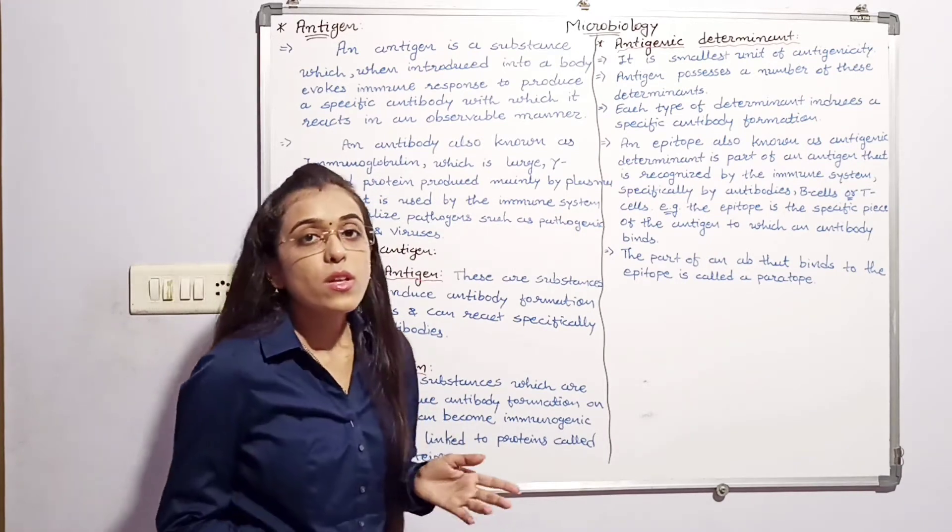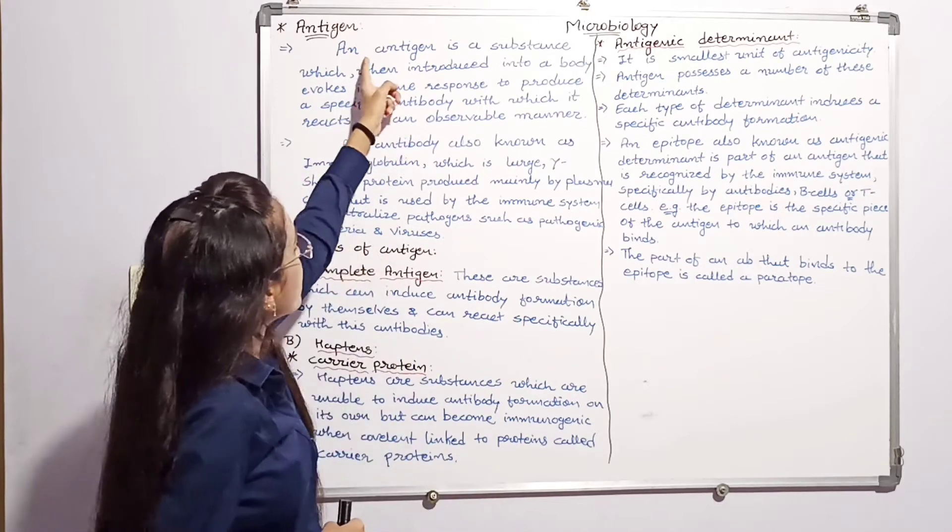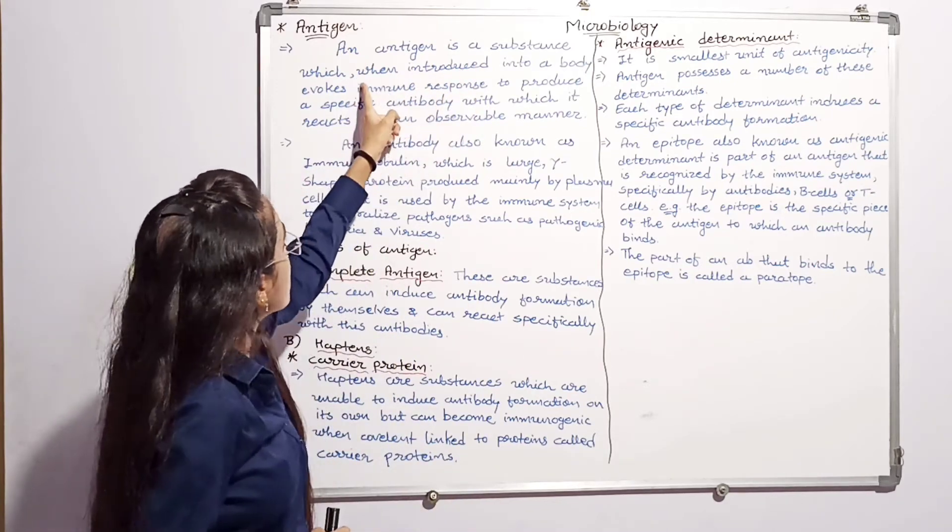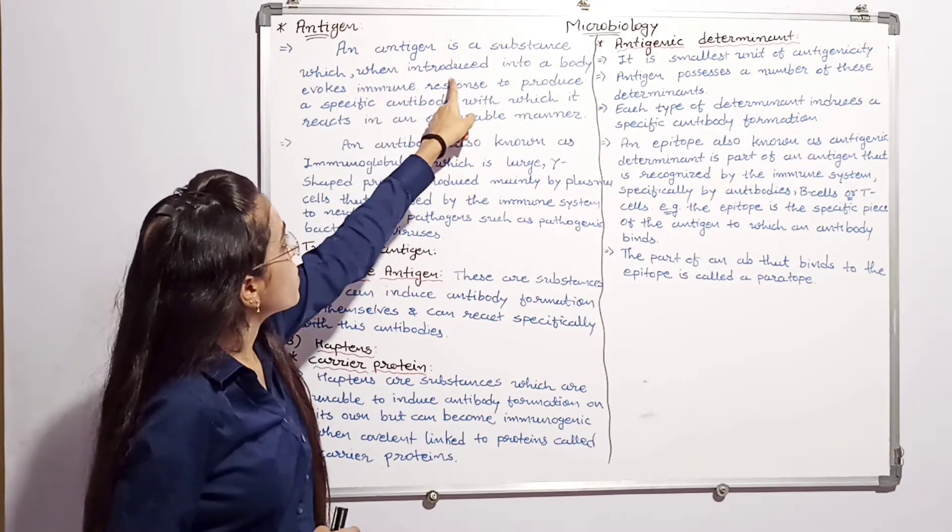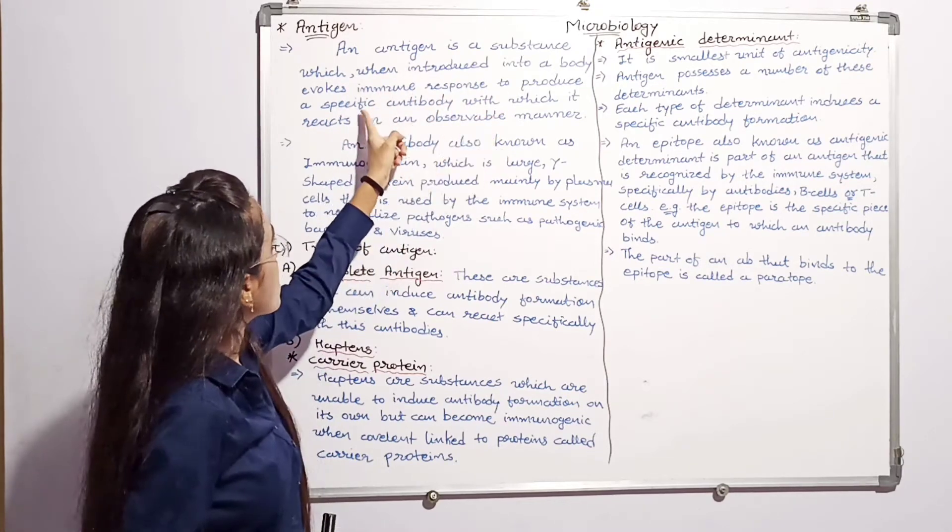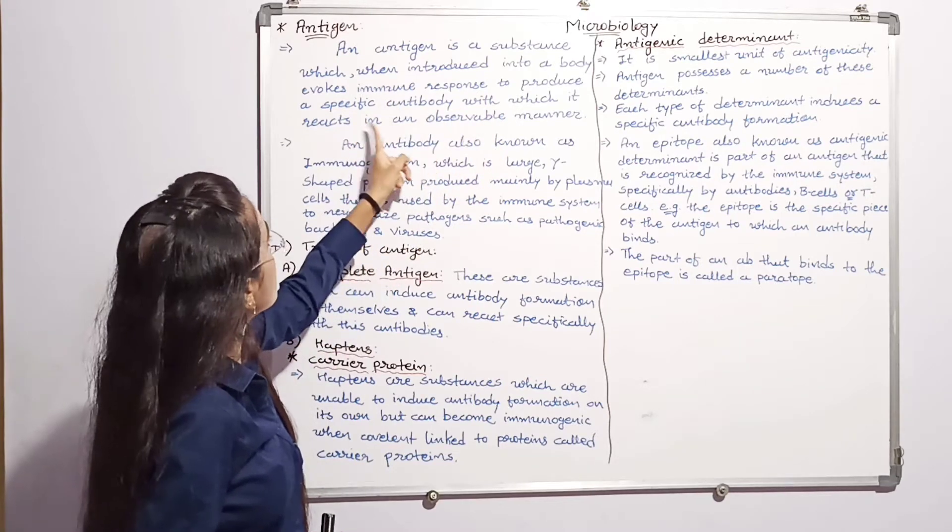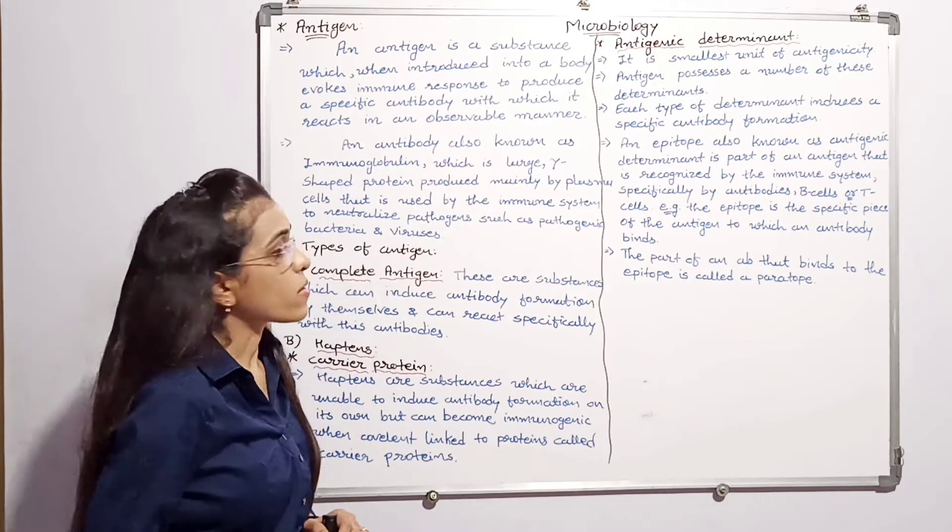First, what is antigen? An antigen is a substance which, when introduced into a body, evokes immune response to produce a specific antibody which it reacts in observable material.